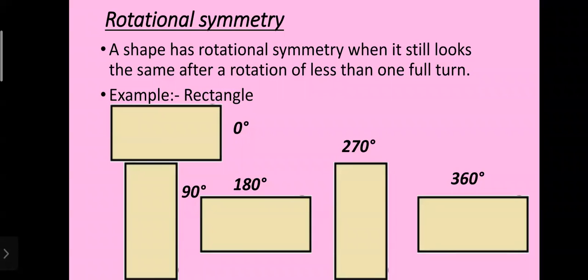Let's see with an example. Here I have taken a rectangle. When it is at 0 degrees it looks like this. When I rotate it to 90 degrees it looks different from the original figure. When rotated to 180 degrees it looks the same as the original rectangle. And when rotated to 270 degrees it looks different again.